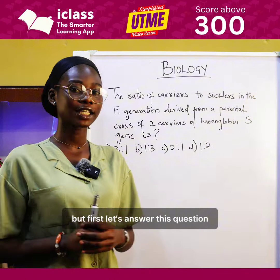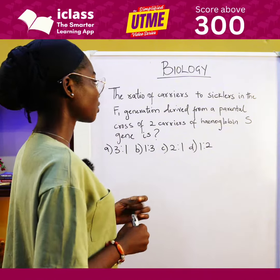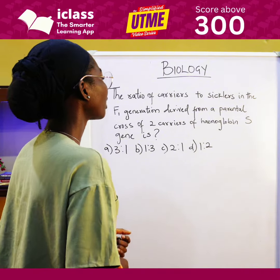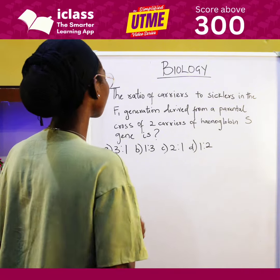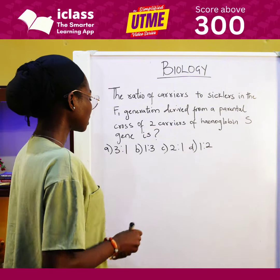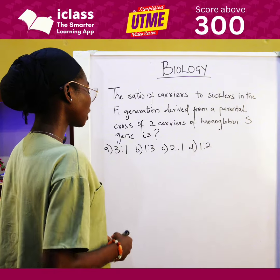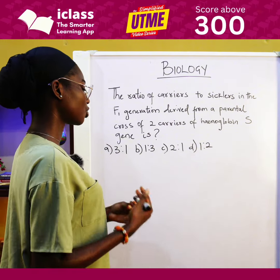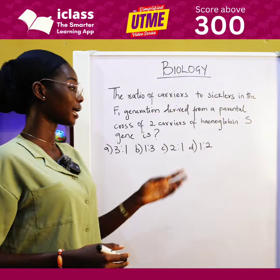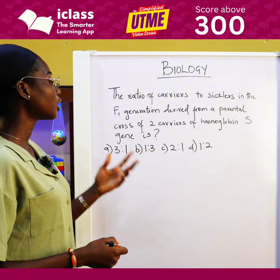But first, let's answer this question. The ratio of carriers to C-class in the F1 generation, derived from a parental cross of two carriers of hemoglobin S gene, is: A. 3 is to 1, B. 1 is to 3, C. 2 is to 1, and D. 1 is to 2.